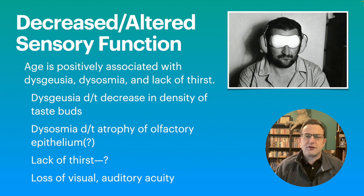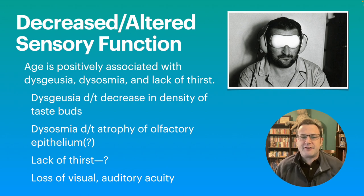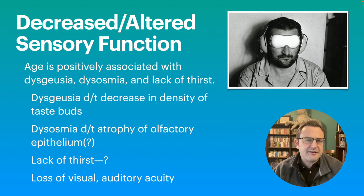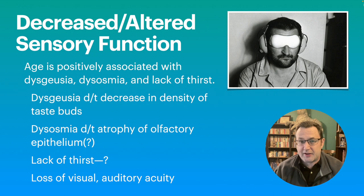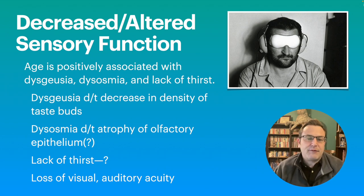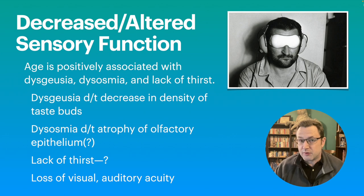The first one is altered or decreased sensory function. Age is positively associated with dysgeusia, dysosmia, and lack of thirst. Dysgeusia is altered taste, or you can have ageusia, which is lack of taste. Dysgeusia is believed to be due to a decrease in the density of taste buds, though some literature says it might be due to a decrease in the acuity of taste buds. Dysosmia is due to the atrophy of the olfactory epithelium lining of the nasal cavities. There also appears to be a lack of thirst sensation, and there is loss of visual and audio acuity, which also links to a risk of malnutrition.